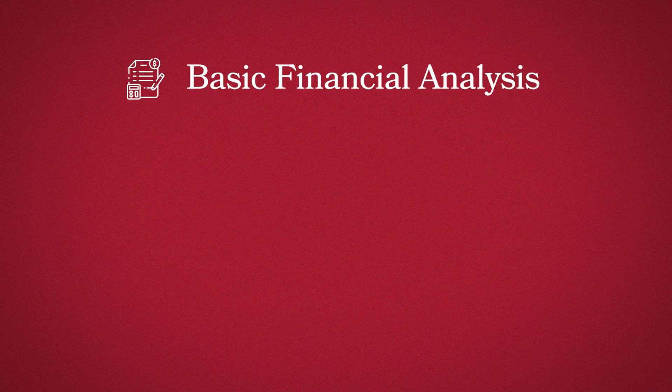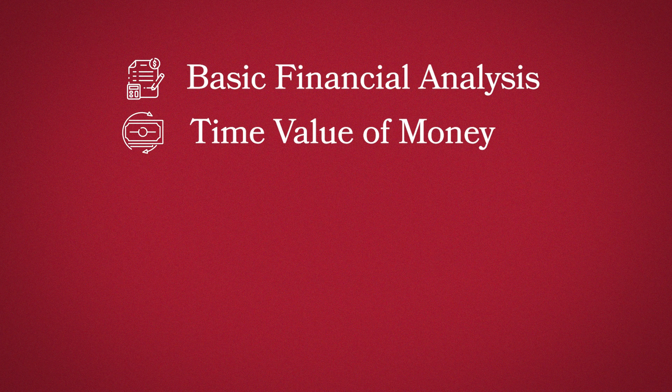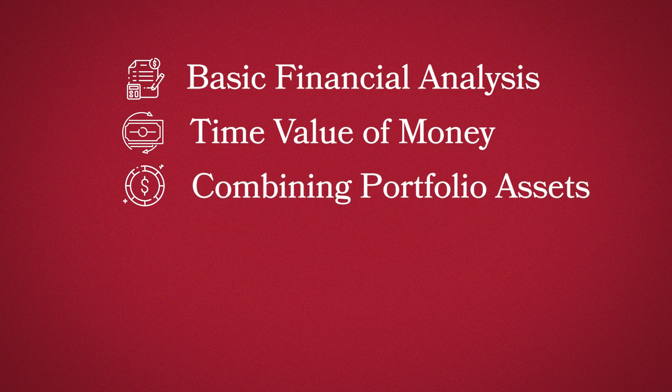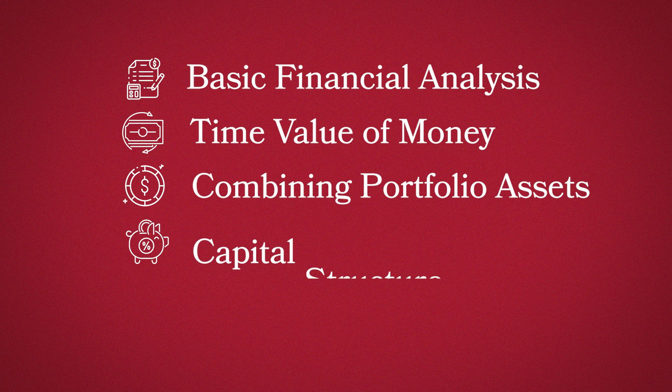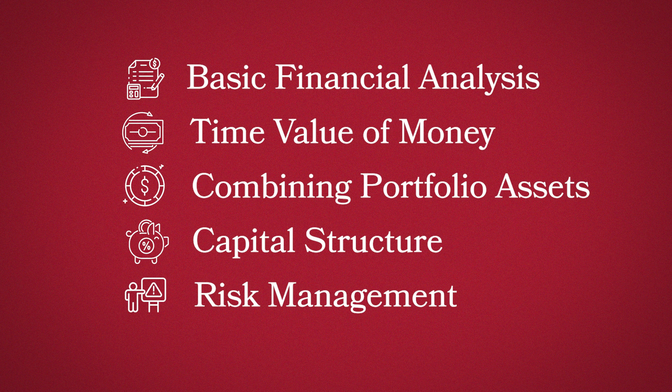We start off really talking about the role of finance and what's the point. Through some basic financial analysis, looking at some financial statements, we then move into something called time value of money, where we try to figure out how much should we be willing to pay today for something that's going to generate some level of cash flow in the future. Then we look at how do we combine assets in a portfolio to try to bring down the risk of the overall portfolio. Then ultimately, we move into what we call capital structure — how should a business finance itself? And then we finish the class talking about risk management and what companies can do to protect themselves from the unknown.